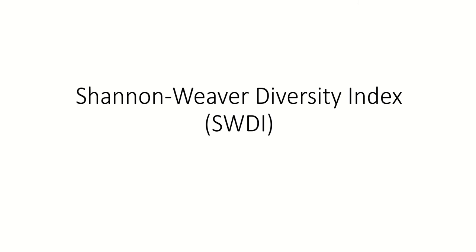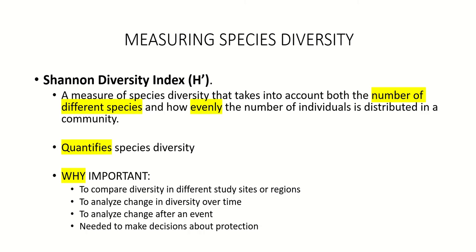That's what we're talking about here — it's called the Shannon Weaver Diversity Index. It's a mathematical formula where you plug in data about the species in an ecosystem, and you end up with a number called an index. This number tells you how diverse an ecosystem is — it quantifies it. The Shannon Weaver Diversity Index, symbolized as H-prime, is a measure of species diversity. It takes into account all the different species and how evenly they're distributed, putting a number to diversity.